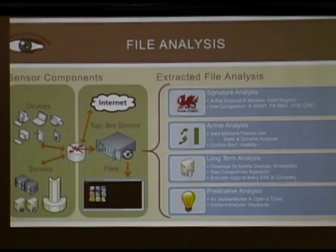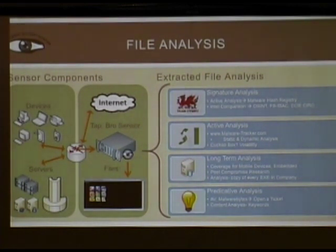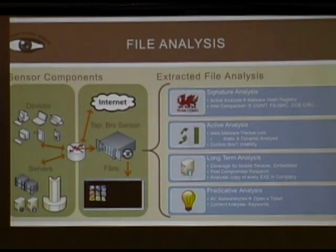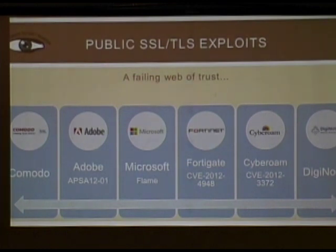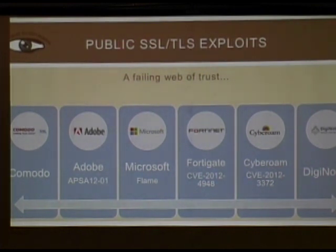I think of this as the Christmas story of Bro — the past, the present, the future, and the things that may be. In the past: all of our intel, signature analysis, Team Cymru, intel comparisons. In the present: active analysis — take every executable and put it in Cuckoo sandbox or JS-unpack. In the future: long-term analysis, coverage for mobile devices, post-compromise analysis. Where's your directory of every executable in your company? Should you have a hash list and check if something running in your network is on it? And predictive analysis: I have a custom script that emails me every time someone downloads Malwarebytes.